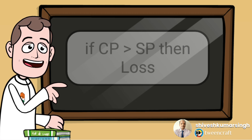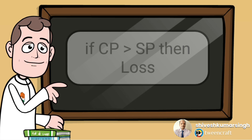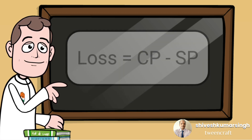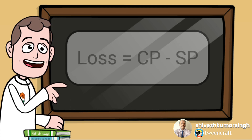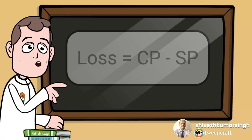So in this process we can have two conditions. One: when cost price is greater than the sale price — cost price being what we pay while purchasing, and sale price being what we get while selling — then no doubt there will be a loss, because we are paying more and getting less. The formula for loss is: Loss = Cost Price minus Sale Price. We face a loss when sale price is smaller than the cost price.